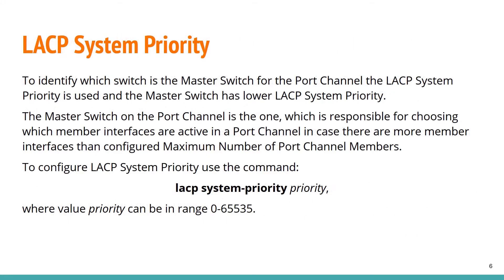LACP system priority: to identify which switch is the master switch for the port channel, the LACP system priority is used, and the master switch has a lower LACP system priority. The master switch on the port channel is the one responsible for choosing which member interfaces are active in the port channel, in case there are more member interfaces than the configured maximum. To configure LACP system priority, use the command 'lacp system-priority' with a priority value, where the value can be in the range from 0 to 65535.